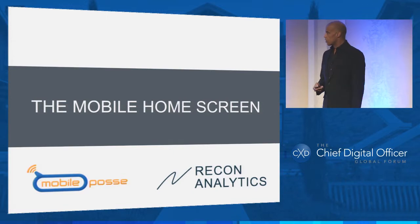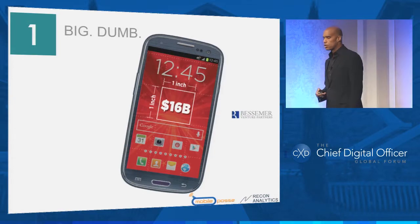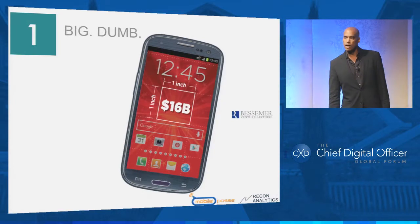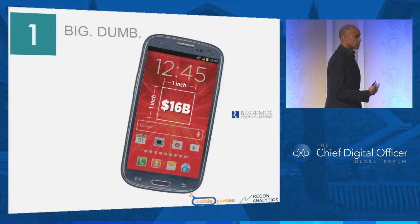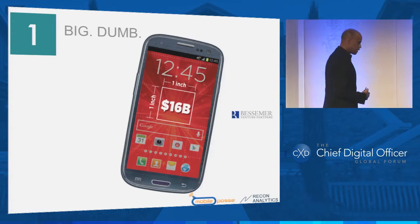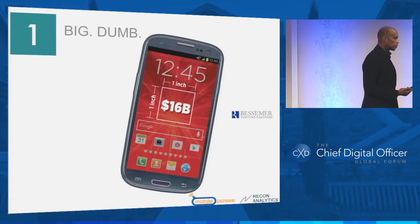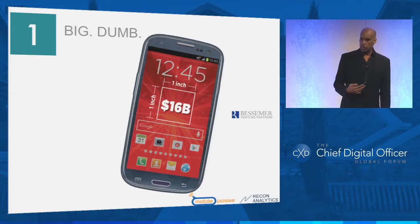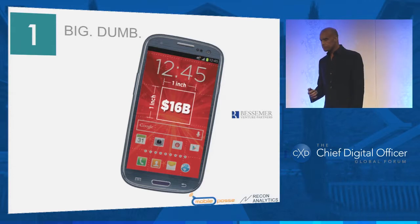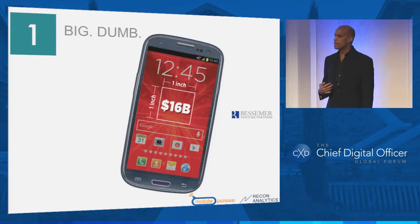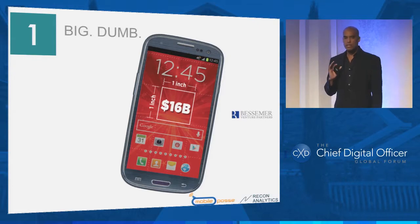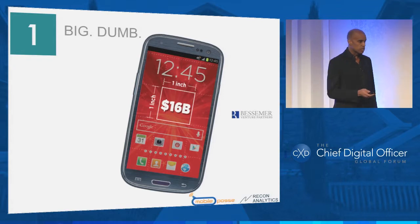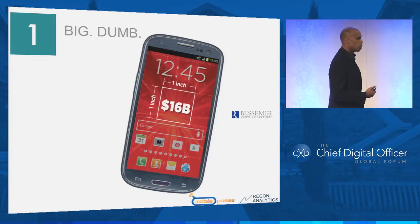We only have 10 minutes, so I want to jump into this fairly quickly. We call this the home screen of your device. We've seen presentations just 10 minutes ago talking about how you pick that phone up 150 times a day — Nielsen, Lumi, Arbitron quantify it at around 150 and up. If you look even closer, 26% of all time on Android is actually spent by a consumer flipping back and forth on their home screen.